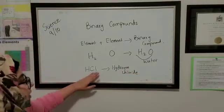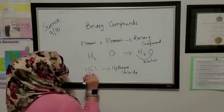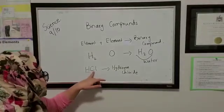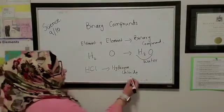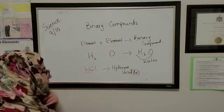So the trick to name your binary compound is, we read this first element as is, the name as is, and the last element, the second element, we just add the IDE suffix at the end, IDE.